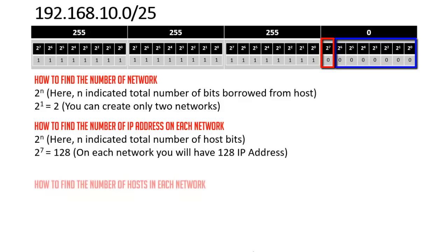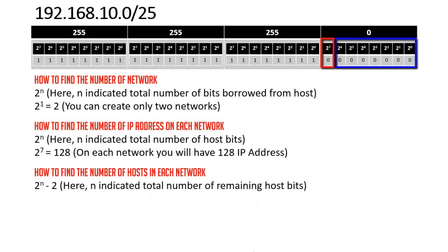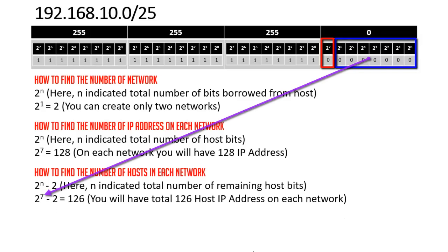Now let's find the number of hosts on each network — this is different from the number of IP addresses. Number of IP addresses means the total IP addresses on each network, while number of hosts means the total IP addresses you can assign to devices. The formula is 2^n − 2, where n is the remaining host bits: 2^7 − 2 = 126. You can assign 126 IP addresses to devices on each network.